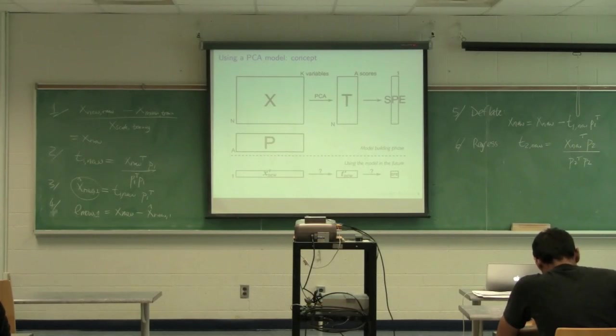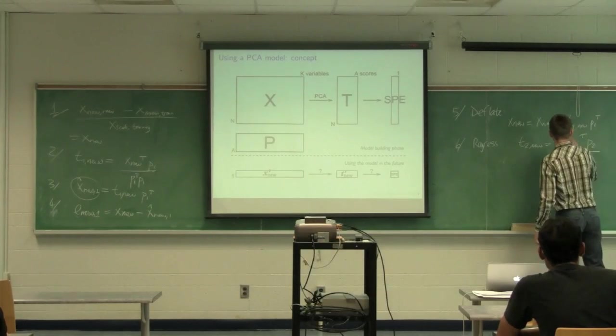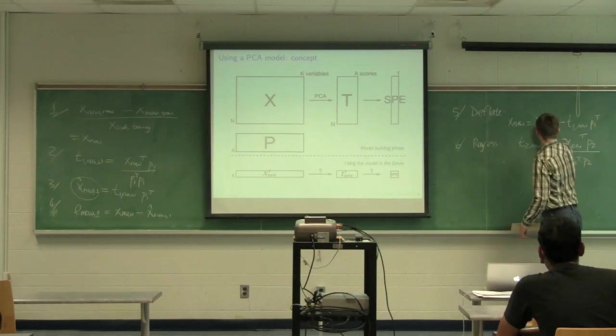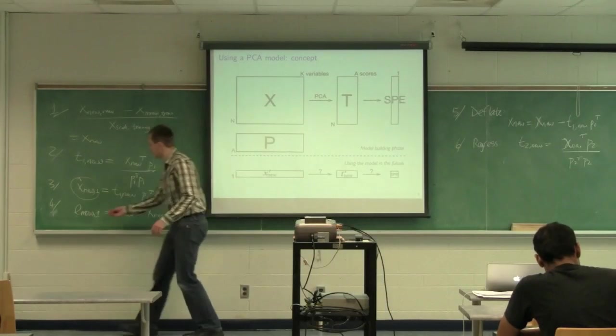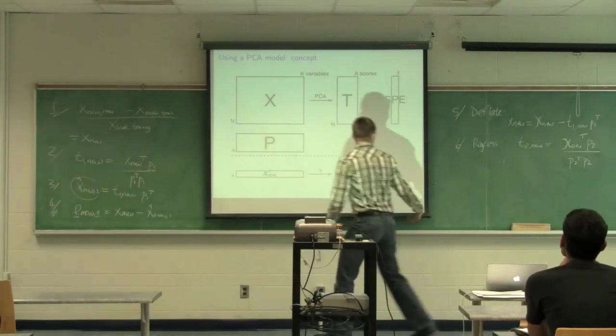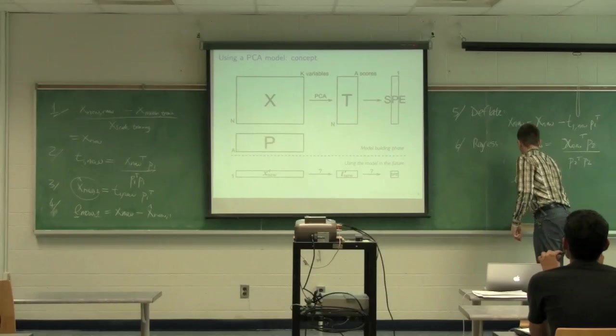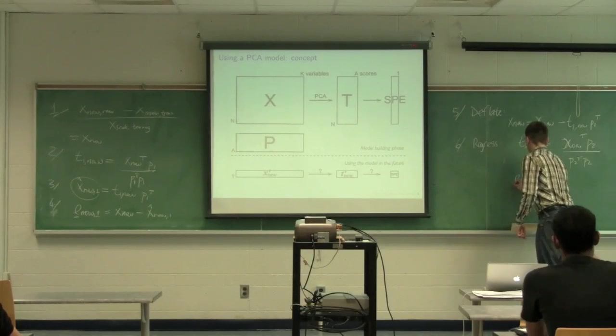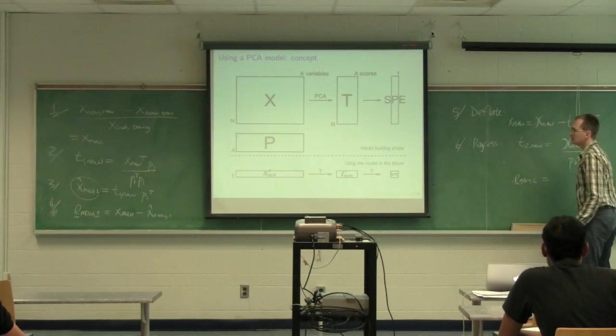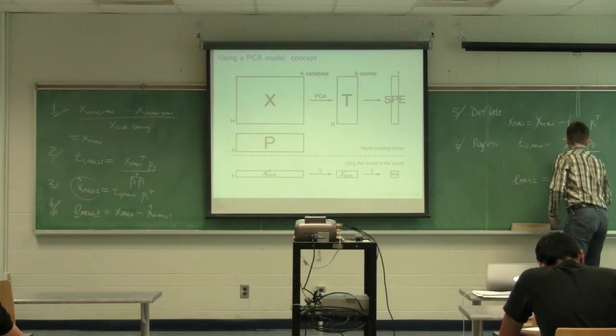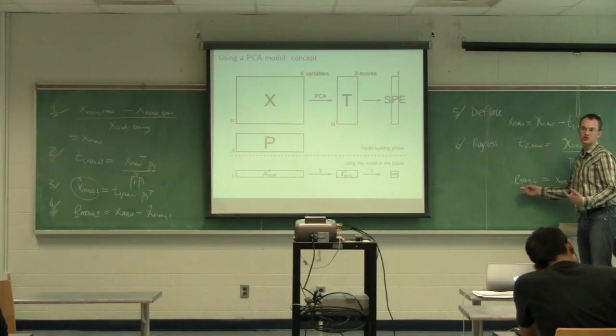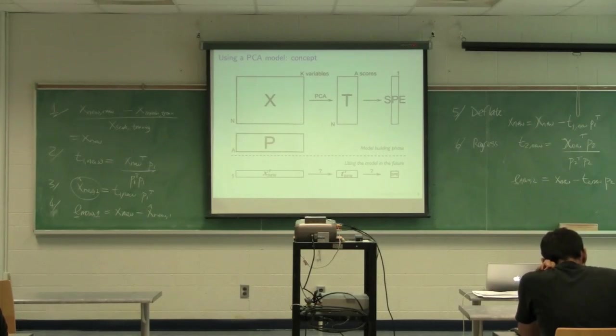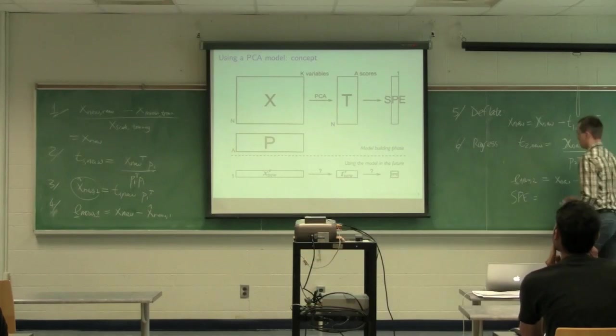So this is just using the new vector. We're just dealing with a single vector. So this would be the residual vector when we've only fit one component. After calculating the second component, we can calculate e2_new.